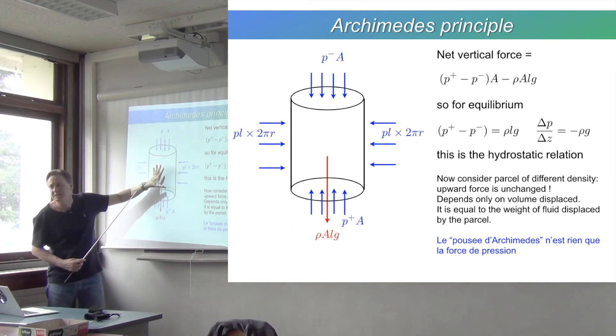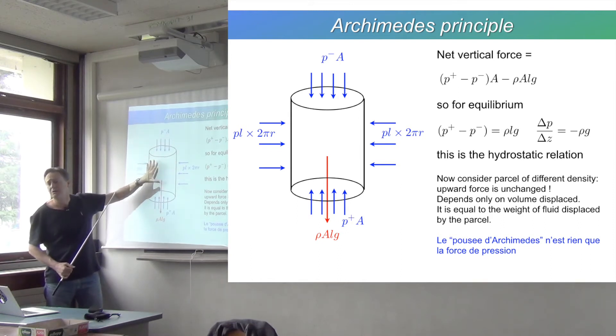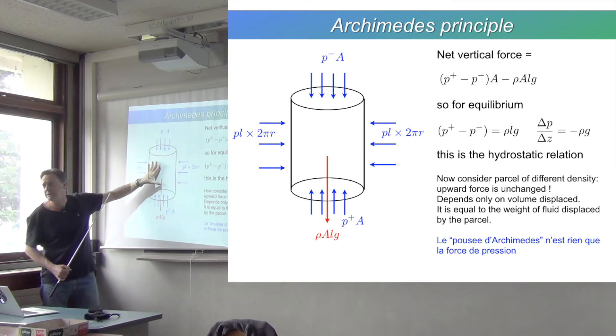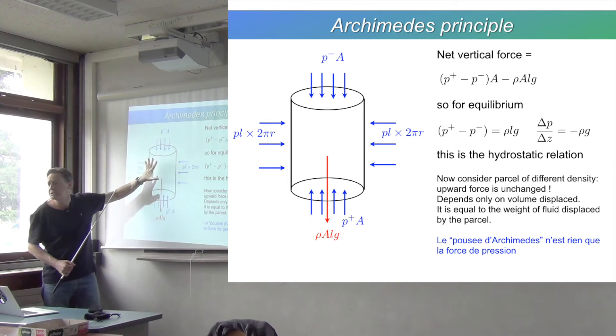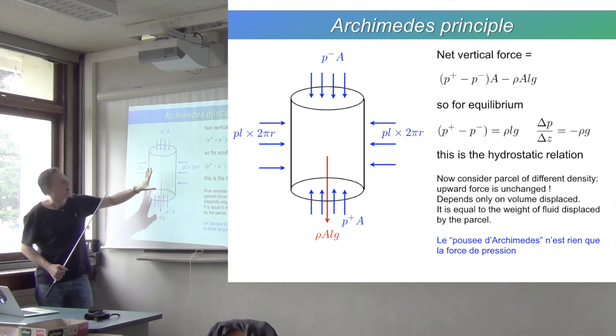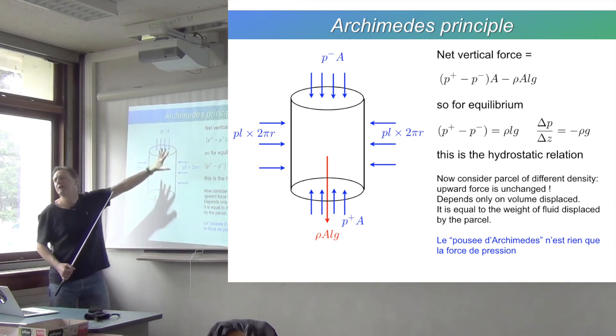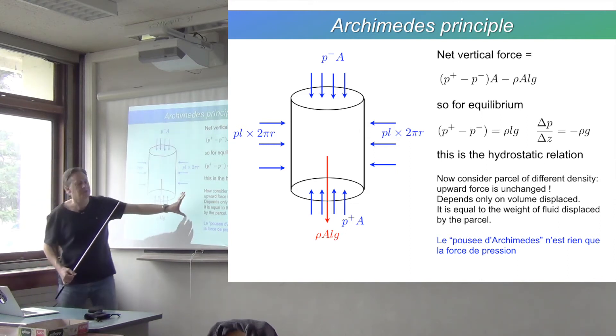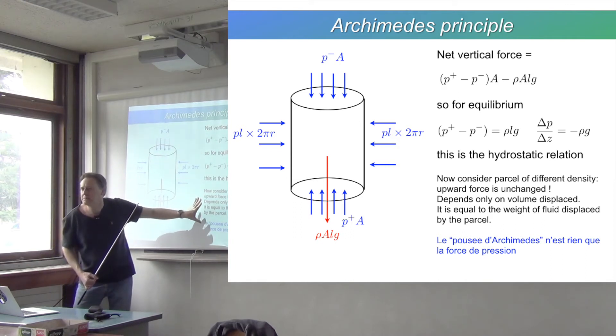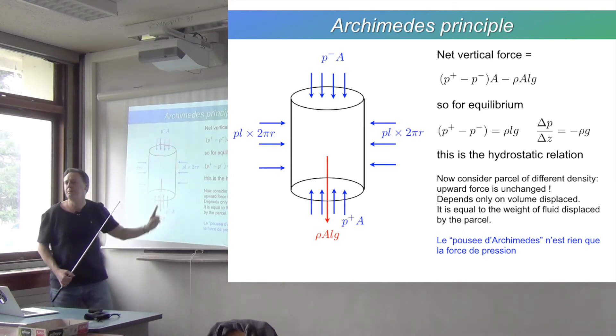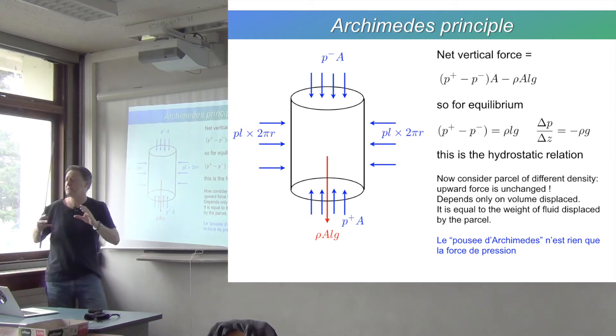The net upward force here is always the same—it doesn't matter what's in that volume. It could be a crown, it could be the same water, could be water of a slightly different density. The pressure pushes in on it and the difference in pressure is the same.